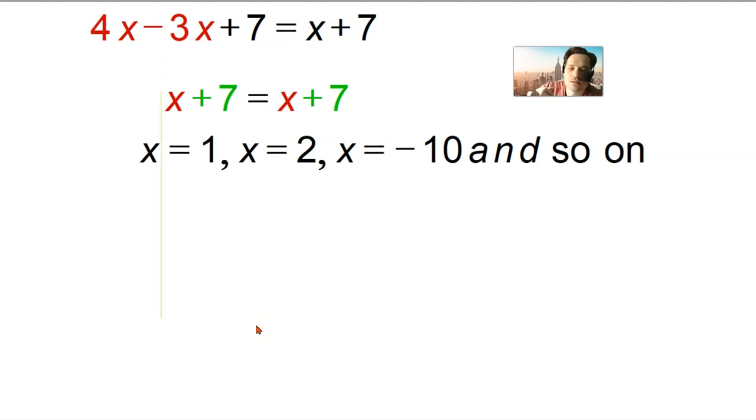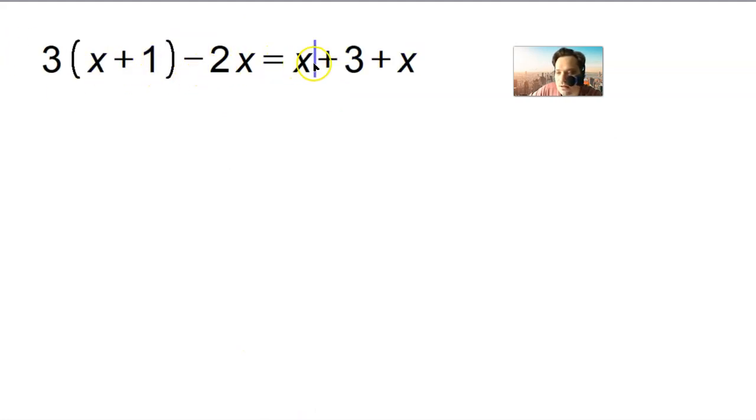Let's focus on a new example. This one says 3 times x plus 1 minus 2x and on the right side you have x plus 3 plus x. We need to somehow make the sides simplified. On the left side you can distribute the 3. I'm going to have 3x plus 3 times 1, so distributing the 3 minus 2x. On the right side I can combine the x's. There are two of them so I'm going to have 2x plus 3.